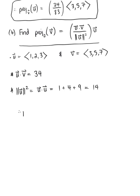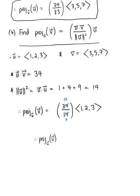Putting this all together, the projection of vector v onto vector u equals the dot product of u and v divided by the magnitude of vector u squared, multiplied by vector u — that is 34/14 × ⟨1, 2, 3⟩. Since 34 and 14 are both divisible by 2, this simplifies to (17/7)⟨1, 2, 3⟩.